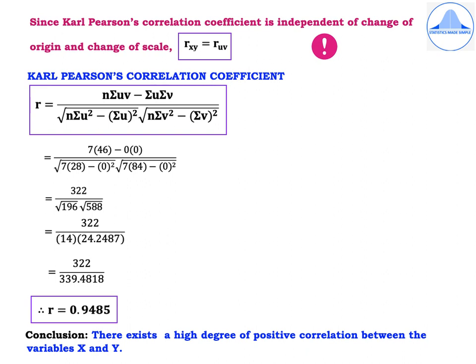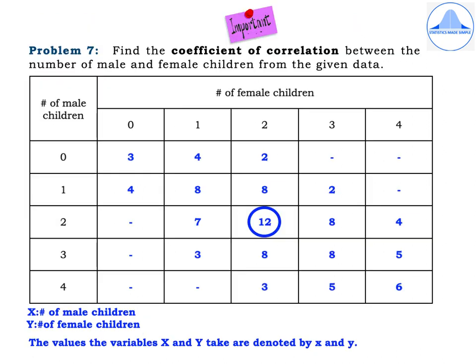Conclusion: there exists a high degree of positive correlation between the variables x and y. Problem 7 is an important one and involves a different method of solving.